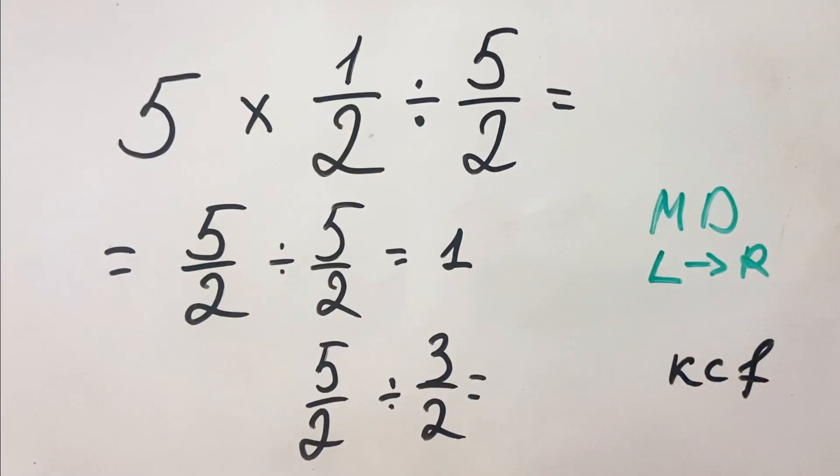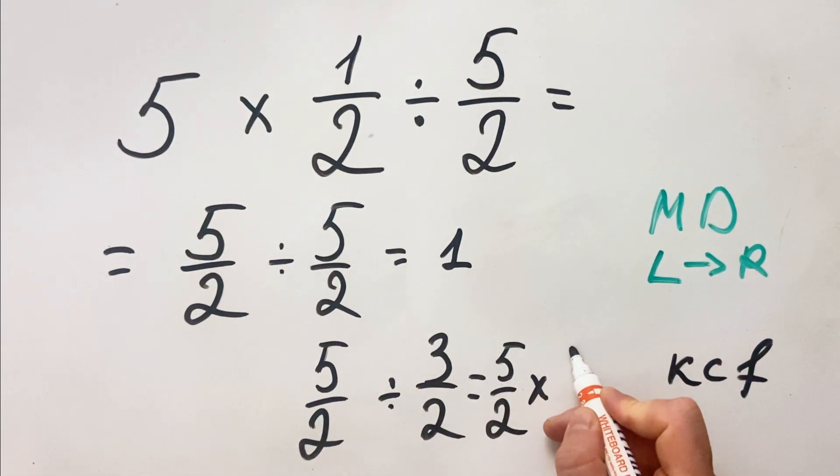In this case you use the KCF rule which means keep the first number, then change the sign to multiplication, and flip the second fraction to its reciprocal.